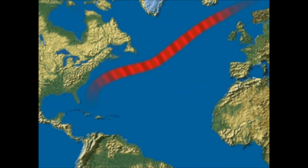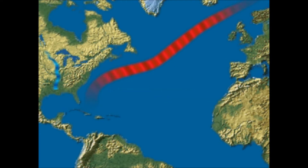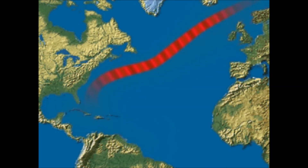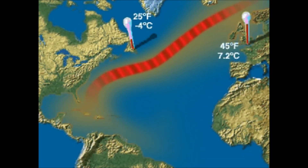Flowing at 10 miles per hour and carrying 5,000 times the volume of the Mississippi, the Gulf Stream brings warm water from the tropics northward, making the climate of the British Isles milder than it would be otherwise.